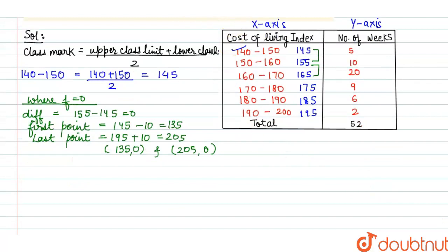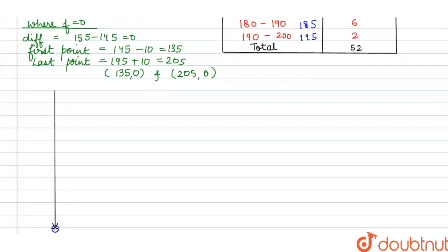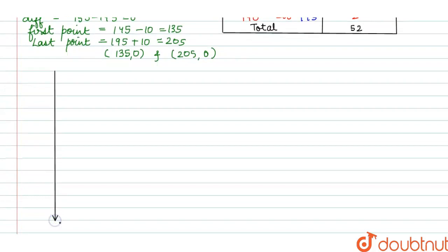Now to draw the graph, I have to take axes. This is the y-axis and this is the x-axis. This is the origin. On the x-axis I will take cost of living index, and on the y-axis I will take number of weeks.